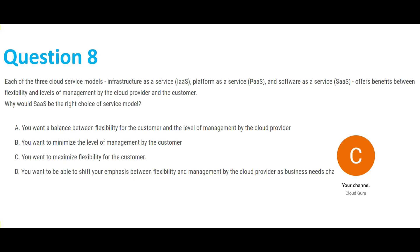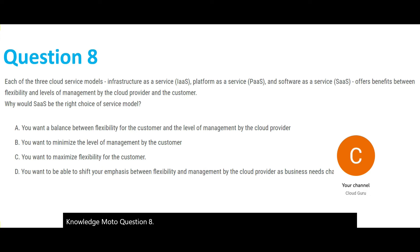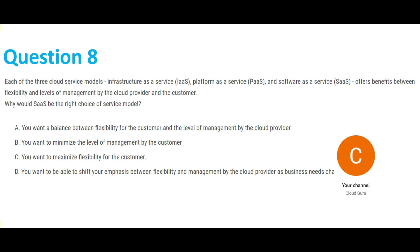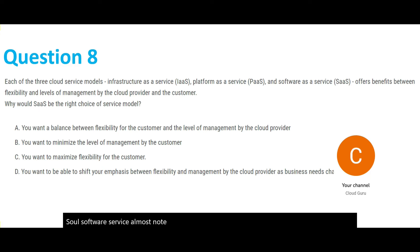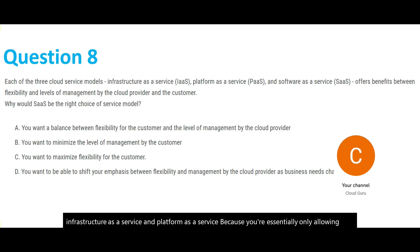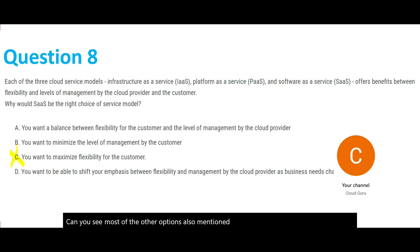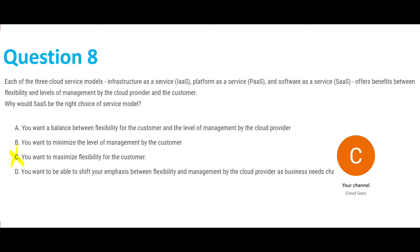Now let's move to question 8. Each of the three cloud service models — Infrastructure as a Service, Platform as a Service, and Software as a Service — offers different levels of flexibility and management. Why would Software as a Service (SaaS) be the right choice? In SaaS, almost no flexibility is provided to the customer compared to IaaS and PaaS, because you're only allowing them to use the software. Options A, C, and D mention maximizing flexibility for the customer, which contradicts SaaS, so we eliminate those.